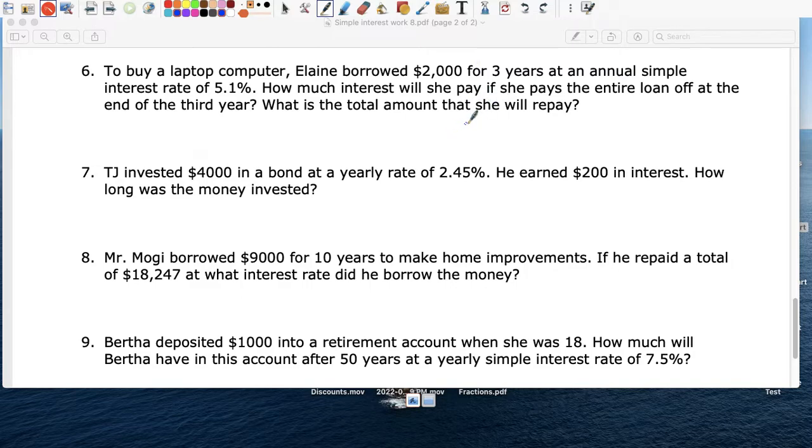Buy a laptop. Elaine borrowed $2,000. So again, I equals PRT. So the amount of money she borrowed, the principal, was $2,000. The interest rate of 0.051. The time was three years. So how much interest? So on top of the $2,000, how much did she have to pay? So $2,000 times 0.051 times three.